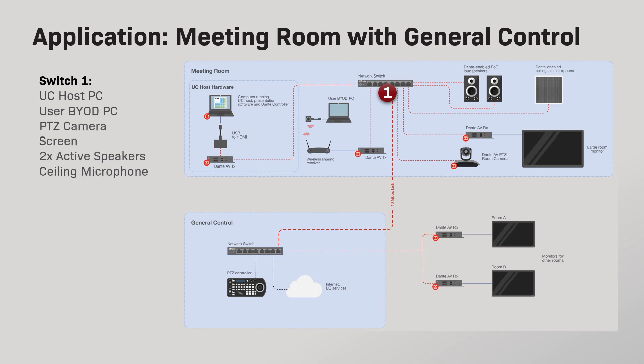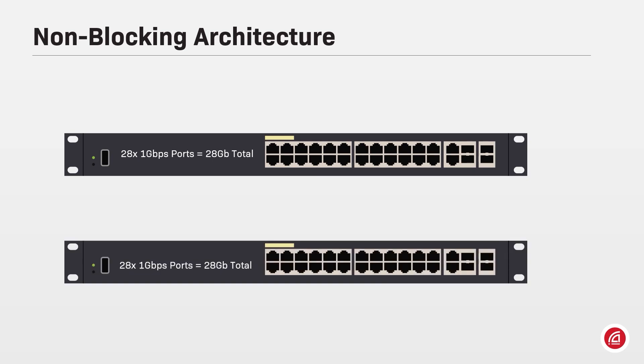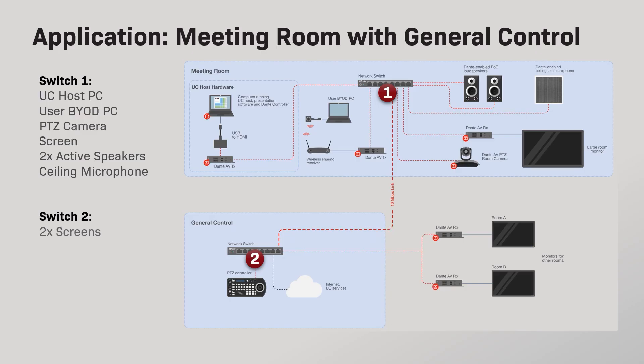Let's have Dante AV equipment connected to a local switch in the room. The PTZ camera is controlled by an operator in another room and the image is being sent to multiple displays for viewers to follow the live stream. All devices are connected to local 1 Gigabit switches with a non-blocking architecture allowing all data to flow across the local physical ports. However, how much bandwidth in total is required on the trunk line for the Dante AV system?